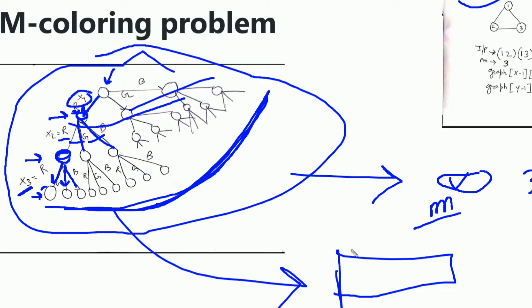If we use backtracking, the main advantage is that we cut down the recursion. For example, if vertex one is colored red and we try to color vertex two also with red, since these two are adjacent we cannot do that, so we do not traverse that branch. This pruning can be applied to most nodes in the recursion tree. Let's now discuss the backtracking approach.